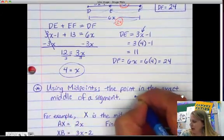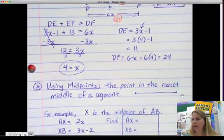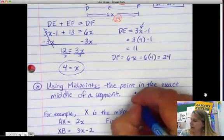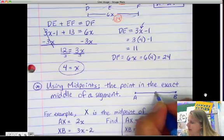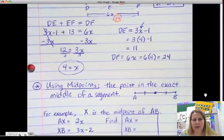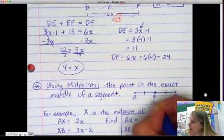So, for example, if you have a segment, and we have A and B, the very, very middle of A and B, if we say that these are equal, remember the little tick marks mean that they're equal, then this right here is the midpoint.